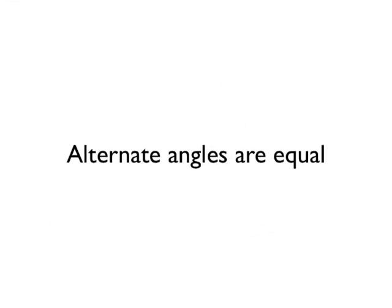This angle rule is really simple. Once you've spotted a pair of alternate angles, it's just that alternate angles are equal. They're exactly the same size as each other. With this angle rule, the hardest bit is actually spotting the angles. But once you have spotted a pair of alternate angles, you know that they are equal in size.